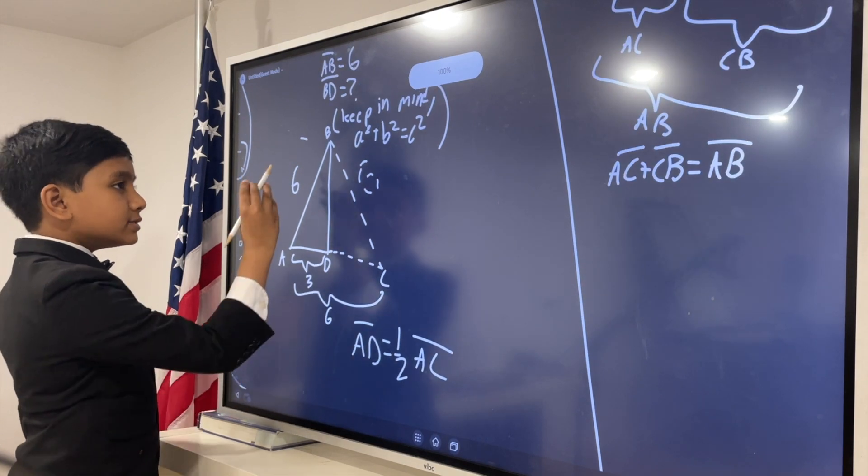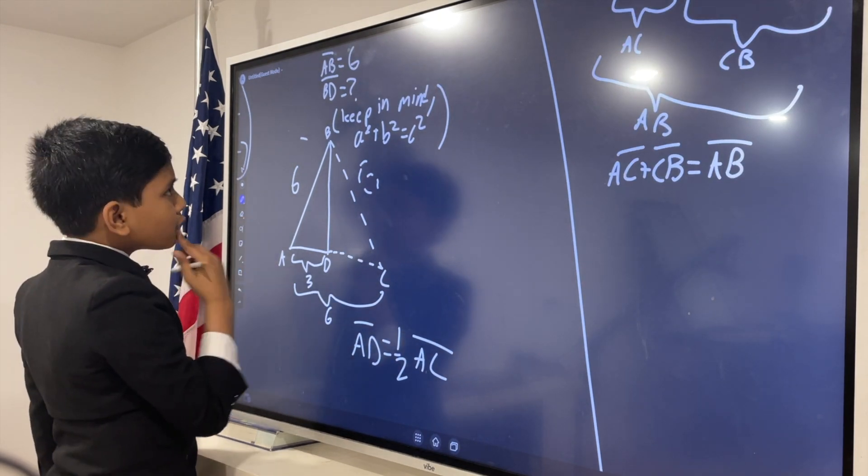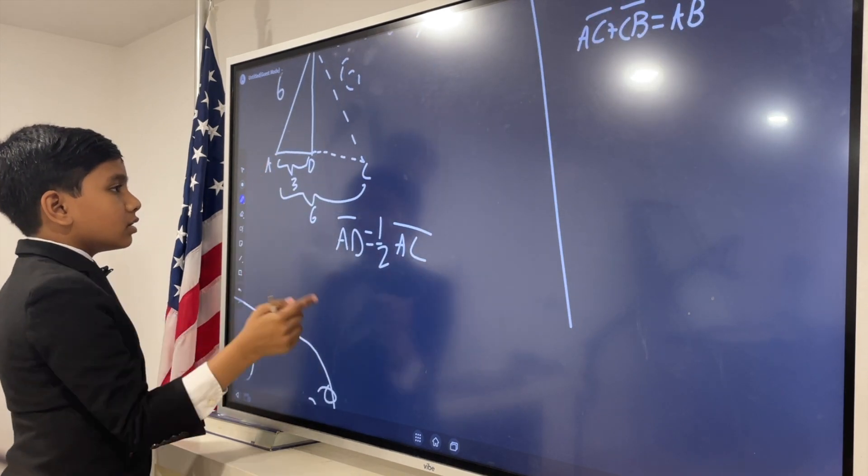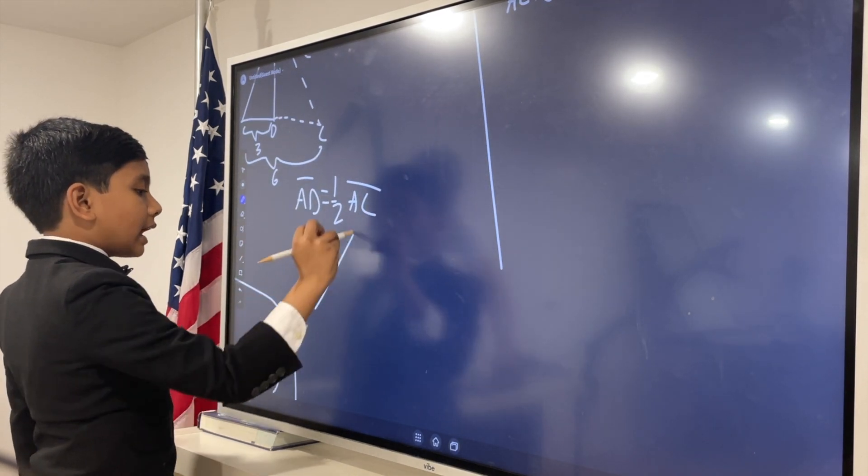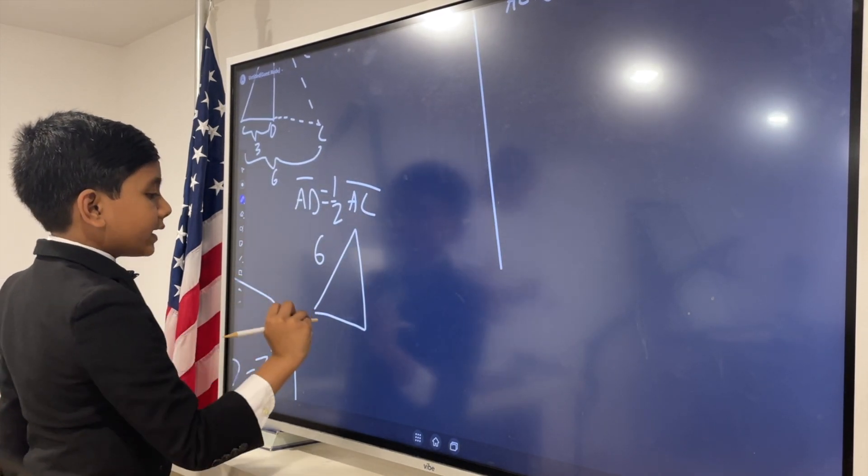We're bisecting, remember? So, that means this is just 3. So, now we have 6. We have 3. How do we find this last side, BD? Well, remember the Pythagorean theorem. Now, let's put that into play.